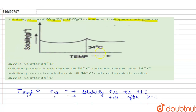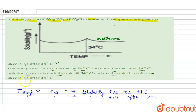The first option says delta H is negative after 34 degrees Celsius. As we have seen, after 34°C the reaction becomes exothermic — it releases heat — and whenever heat is released a negative sign is used, so the first option is correct. The second option says the solution process is exothermic till 34°C and endothermic after — this is wrong. The third option says the solution process is endothermic till 34°C and exothermic after — this is correct. Since the first and fourth options are the same, A, C, and D is the answer.